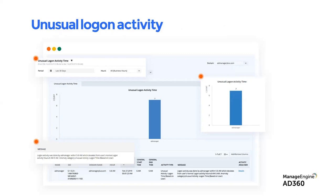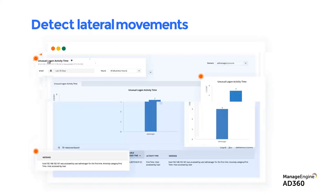If a user who normally logs in from 9 to 9 suddenly has a logon from a different geographic location like Nigeria at 3 AM, with a poor-reputation IP address, the tool — which has an active integration with threat intelligence platforms like Webroot — will flag it. You get context: the user who usually logs in from nine to nine has this deviation today and is accessing this specific file or folder.